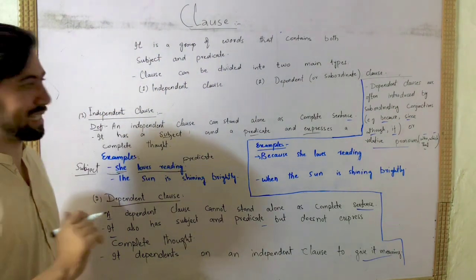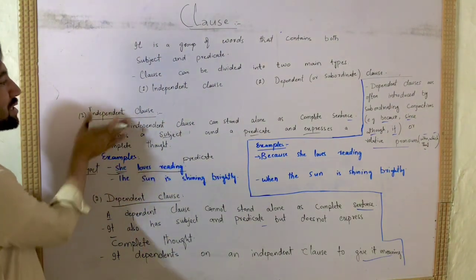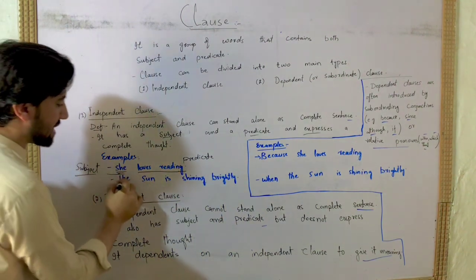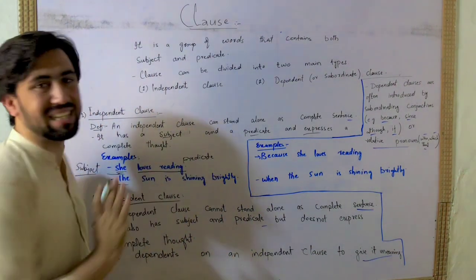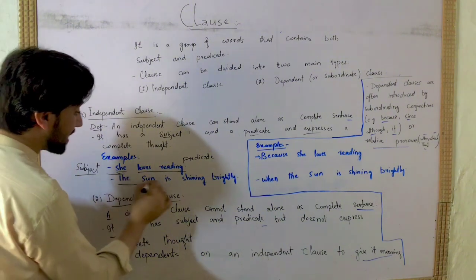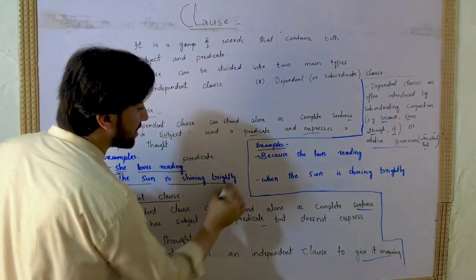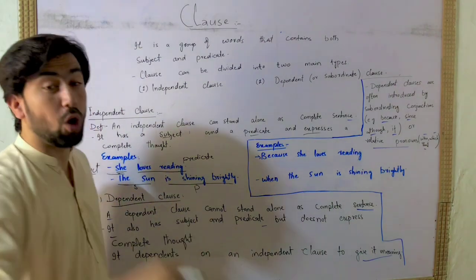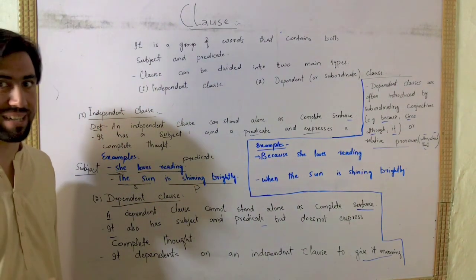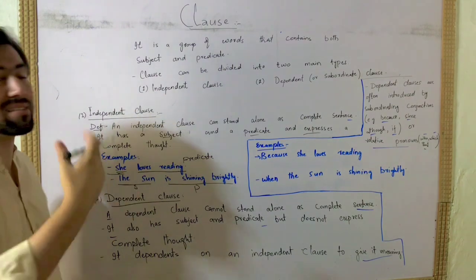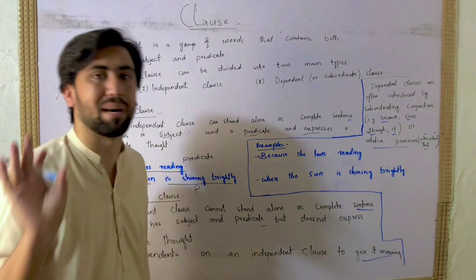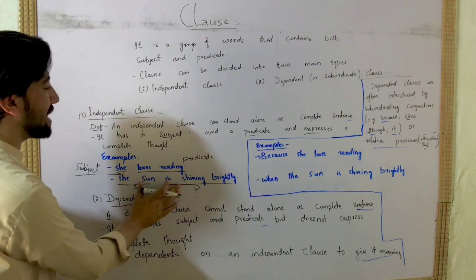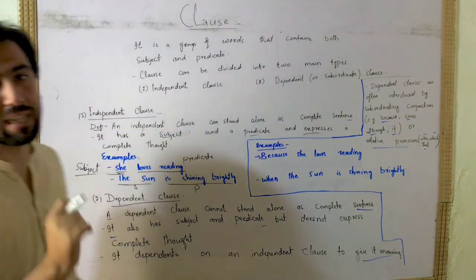You want a complete thought. We are looking at the independent clause and bringing two examples. 'The sun is shining brightly.' 'The sun' is the subject and 'is shining brightly' is the predicate. We are expressing a complete thought.